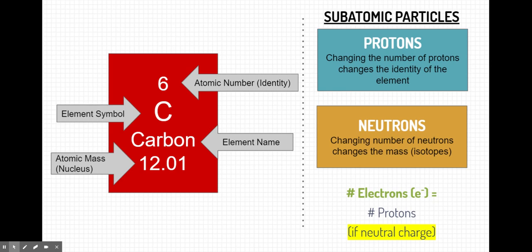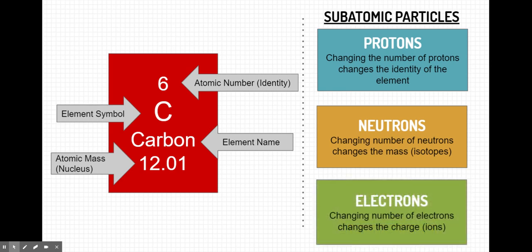So going back to electrons, if we change the number of electrons, we change the charge of that element. And if that element has a charge, we typically call it an ion, either a cation or an anion.